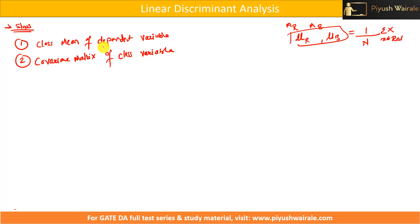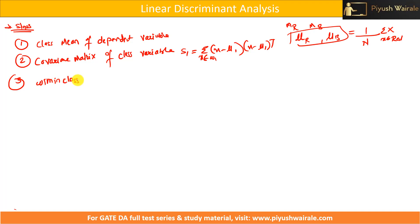We do the same thing as in PCA. The covariance matrix, represented by s1, is the summation of (x minus mu1) times (x minus mu1) transpose, for x belonging to that particular class. The third step is to find the within-class scatter matrix, represented by Sw. That is simply the summation of s1 plus s2 — the sum of the covariance matrices of both classes.